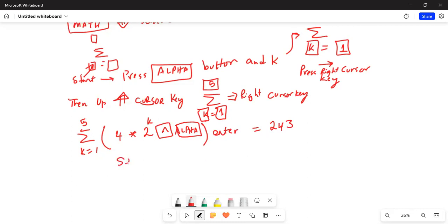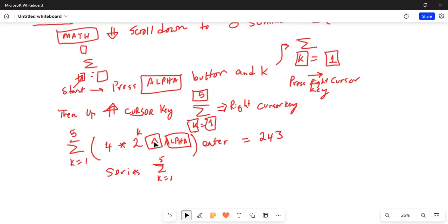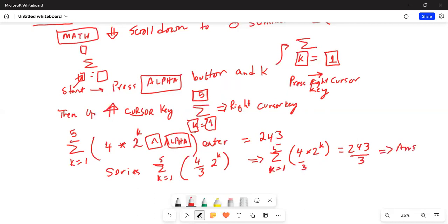Now, our actual series is k equal to 1 through 5. And if you look at the series, you see it is 4 third, 2 to the power of k. This is 243. So far we have done summation k is equal to 1 to 5, 4 multiplied by 2k, and the answer is 243. To get the final answer, then you have to divide it by 3. This is your final answer.